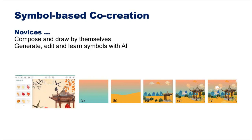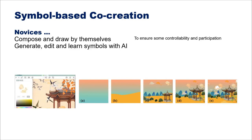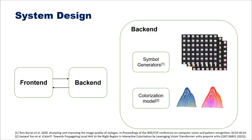The co-creation process reflects our design intention. We want novices to obtain controllability and participation in the painting. Automation is also needed to address their painting weaknesses. The system is designed with a front-end and back-end. The front-end is based on the React.js framework, and the interface is divided into a drawing workspace, tool menu, and side drawer. The back-end consists of a series of symbol generators trained on 100,000 single symbol images, as well as a pre-trained colorization model.